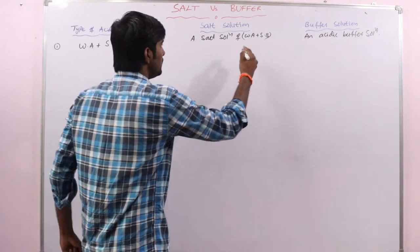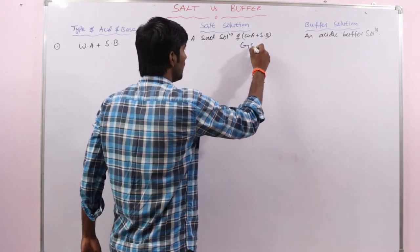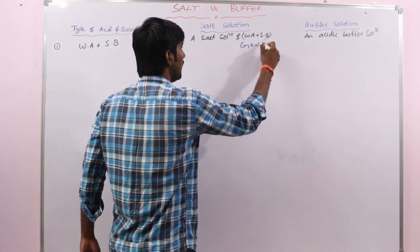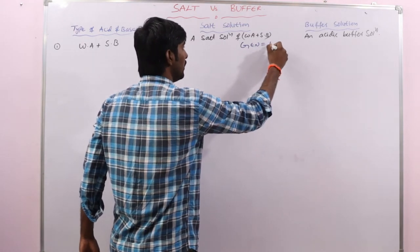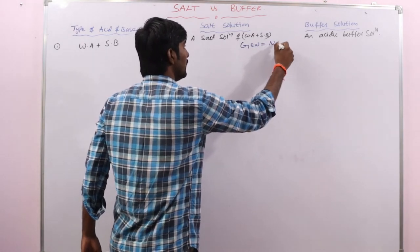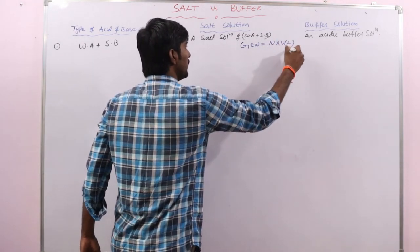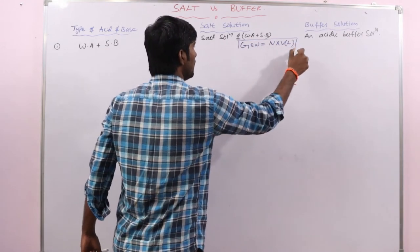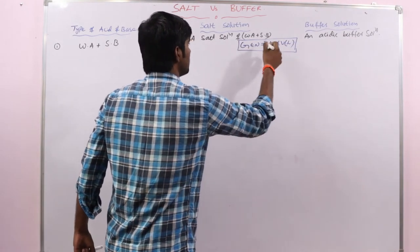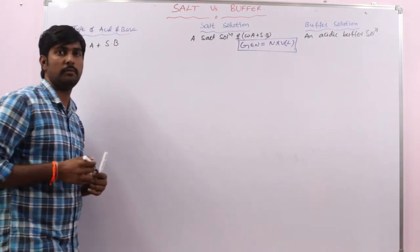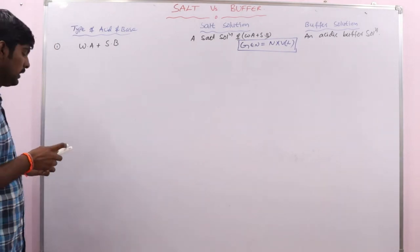Remember this formula: GEN (gram equivalent number) equals N (normality) multiplied by V (volume in liters). So GEN = N × V. This is a very, very important formula.